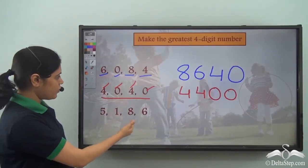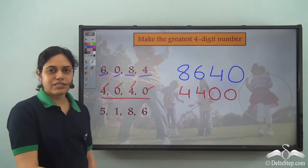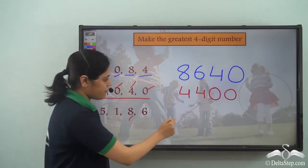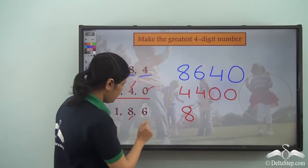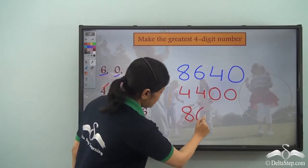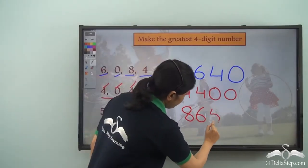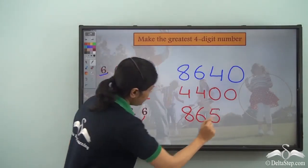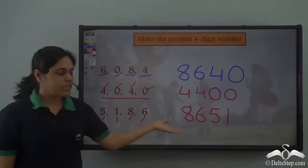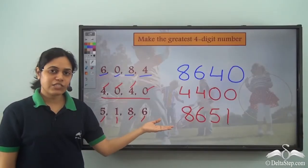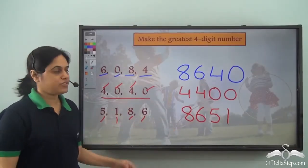Using digits 5, 1, 8, 6 — arrange in descending order: 8 first, then 6, then 5, then 1. So 8651 is the largest four-digit number we can frame using these given digits.